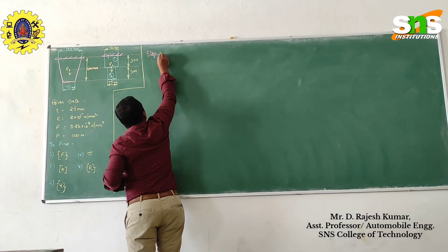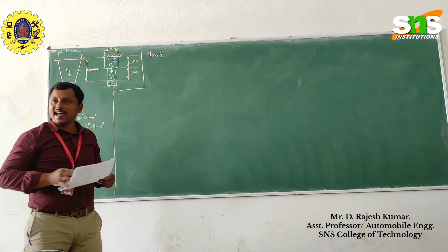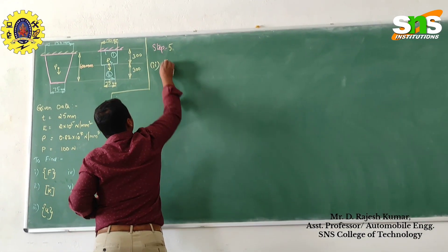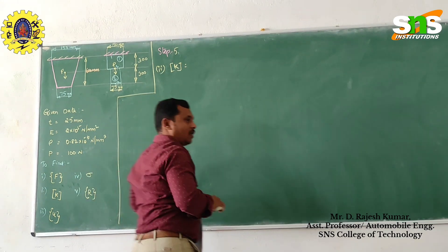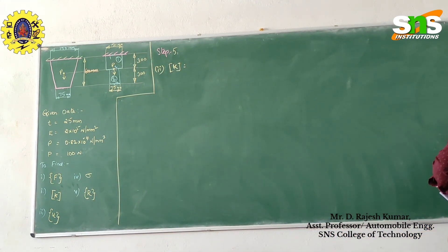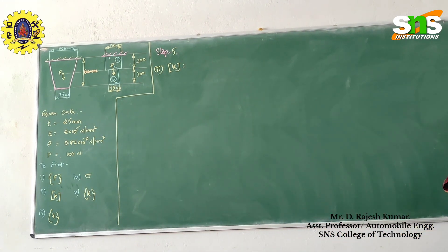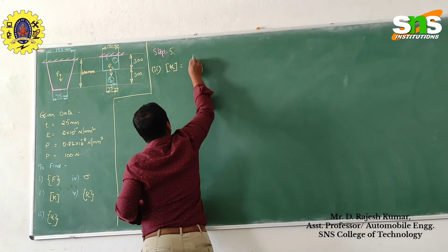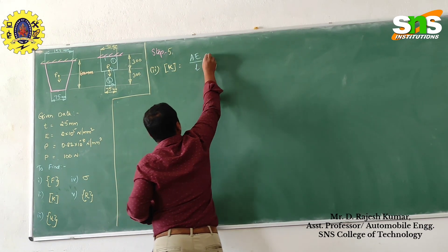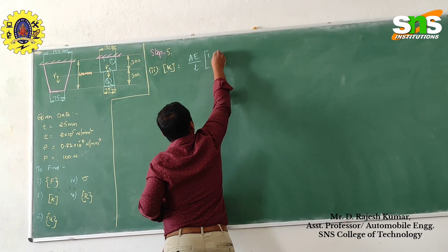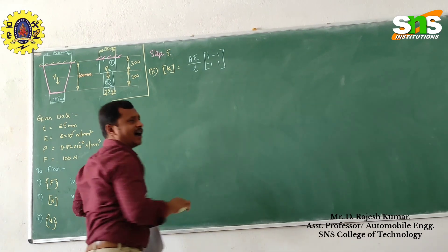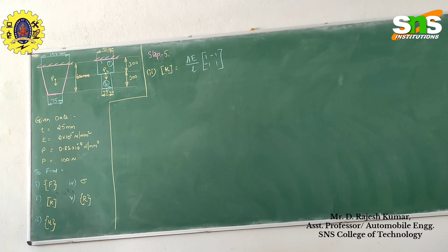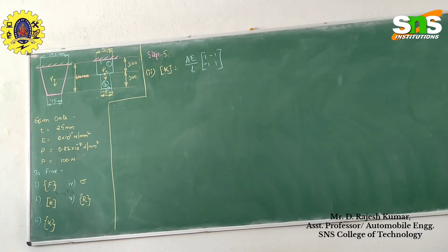So step number 5: finding the stiffness matrix. To find the stiffness matrix, we have to use the power law.